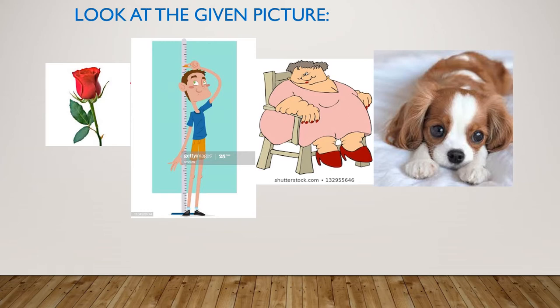Maybe when you looked at the first picture, you thought of a red rose or a beautiful rose. After looking at the second picture, maybe you thought of a tall boy or a fat boy. In the third picture, you could think of a fat lady or an old lady. And after looking at the fourth picture, you might have thought it's a cute puppy, a little puppy, or a furry puppy. So, the words that you used to describe these pictures are called adjectives.